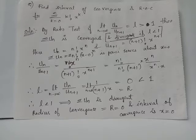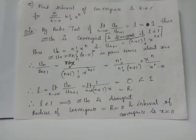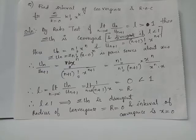This is of the form summation a_n x raised to n, where a_n equals k factorial, or a_k equals k factorial. We have radius of convergence R equals limit n tends to infinity of u_n by u_{n+1}, which is obtained from the ratio test. By the ratio test, whenever this limit equals L strictly greater than 1 the series is convergent; if L is less than 1 the series is divergent at those points.